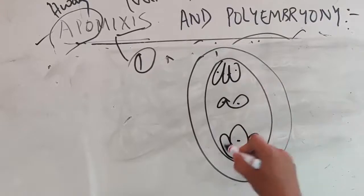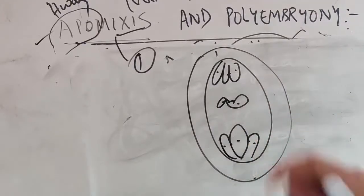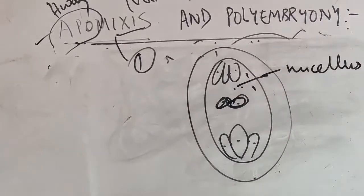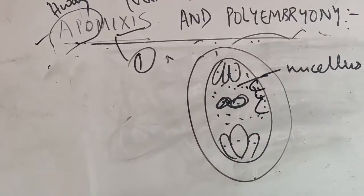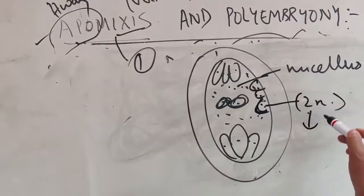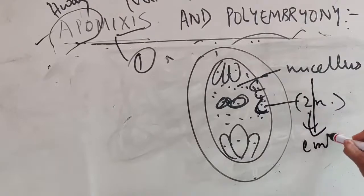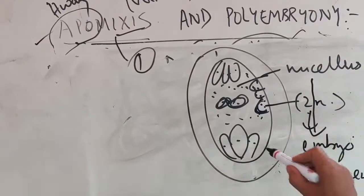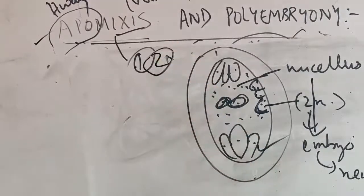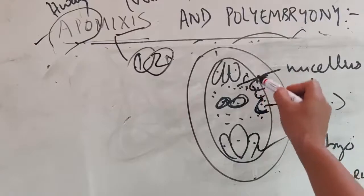The second case involves the embryo sac. The embryo sac contains antipodals, the central cell, egg cell, and synergids. The nucellus cells — cells surrounding the embryo sac — can start dividing. If the nucellus cells start dividing inside the embryo sac, they develop into an embryo, which forms a new individual.